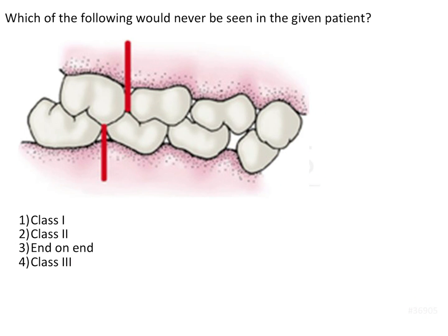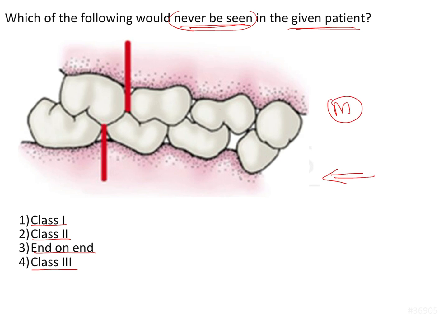Which of the following would never be seen in the given patient: class 1, class 2, end-on, or class 3? What we see in this given patient is towards the midline. This is the deciduous first molar (D), the deciduous second molar (E), and the maxillary first permanent molar (6). Similarly in the mandibular arch, this is D, E, and 6.